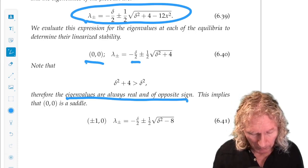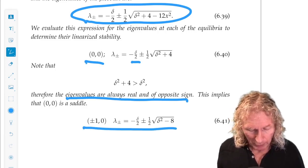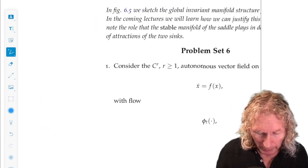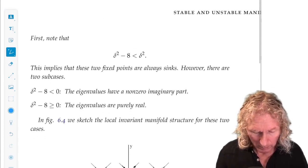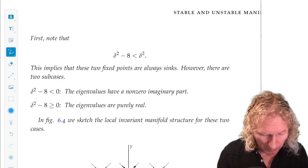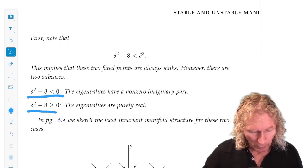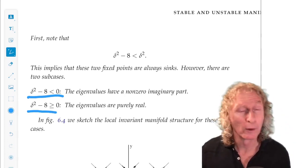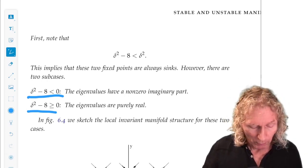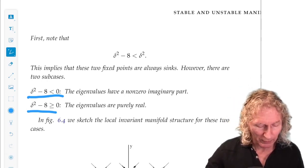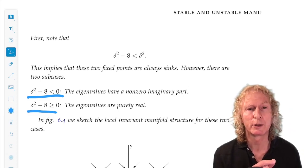The other two equilibrium points. The eigenvalues are given by this expression, and we have to look at two cases for delta squared minus eight greater than or equal to zero. The eigenvalues are purely real. For delta squared minus eight, strictly less than zero, the eigenvalues have a non-zero imaginary part.